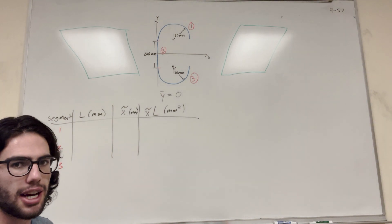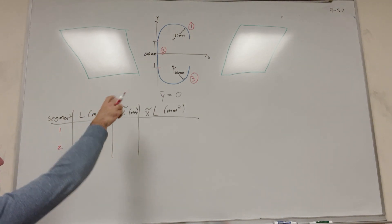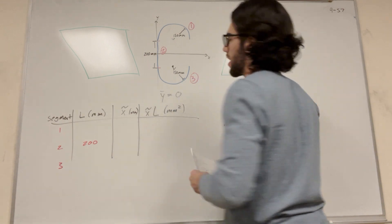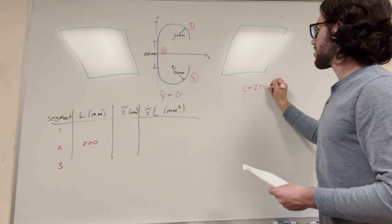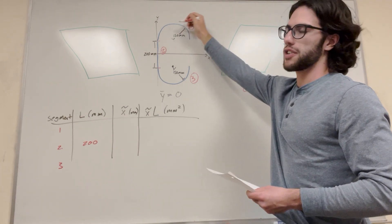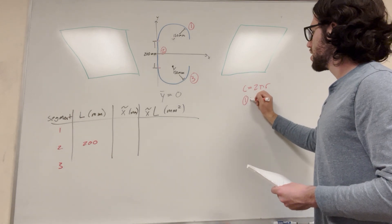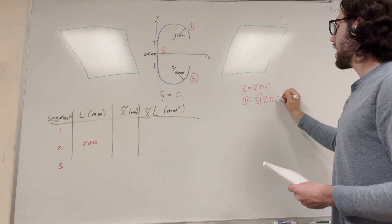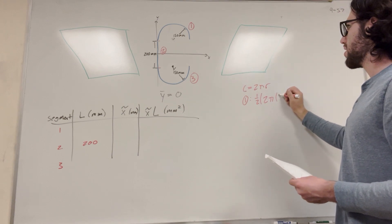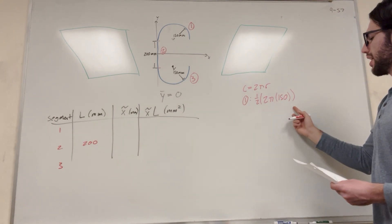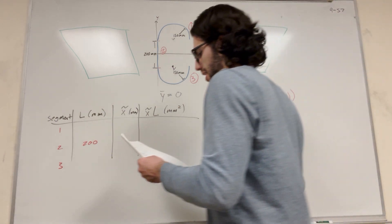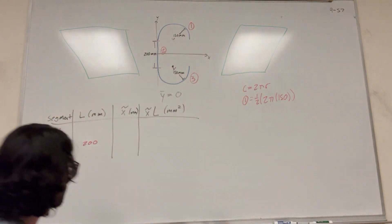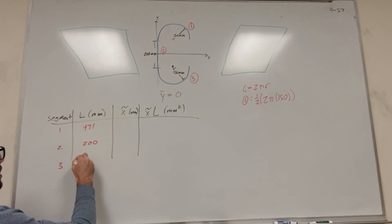Now we need to find the lengths of these segments. Segment two is easy enough. We know that that's 200 millimeters. But how about segment one and three? Well, we know it's kind of the same as the circumference of a circle. Circumference is equal to two pi radius. But in this case, we have half the circumference for each one of these. So segment one is equal to one half two pi, and then its radius is 150 millimeters. Same thing for segment three. If you do the math on this, this length is 471 millimeters. So we know that this is 471, and this is 471.